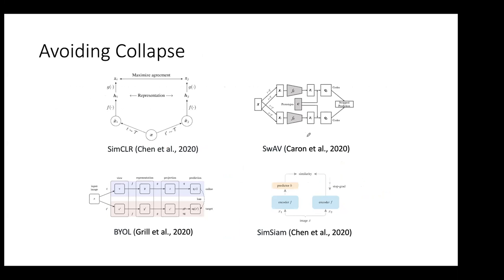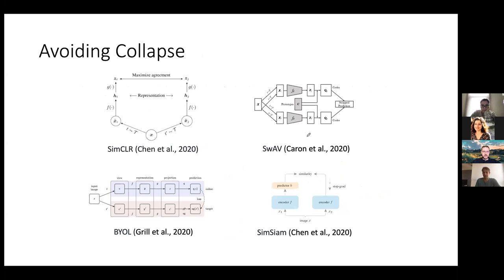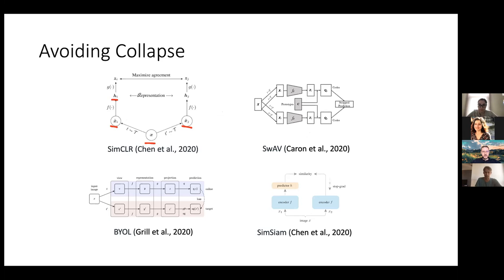Let's look at some methods and how they attempt to solve the collapse problem. Recently there's been a lot of work in this area. I'm showing four methods here: SimCLR, SWAV, BYOL, and SimSiam, but there are many others. They are all similar in that they have two branches: you start with a batch of images X, derive two views using data augmentations, and forward propagate through F to obtain representations. From this point on they do things differently.